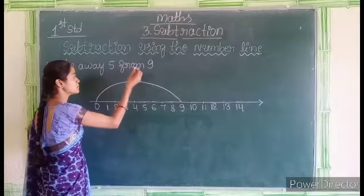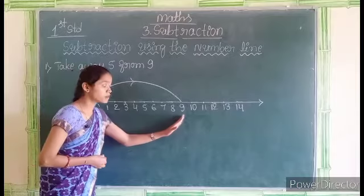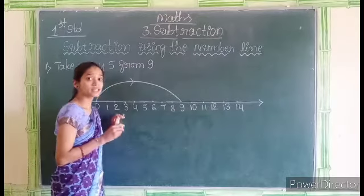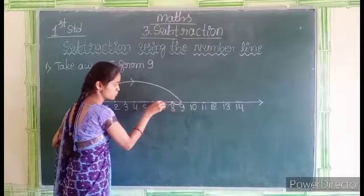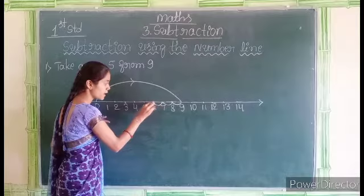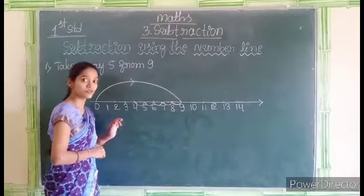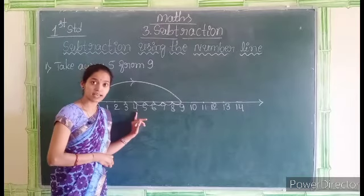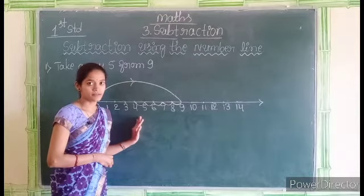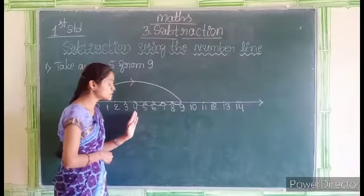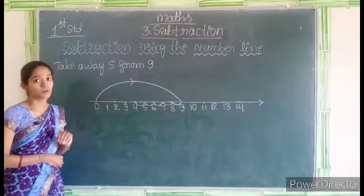To take away 5 from 9, we have to count 5 points back from 9. See: 1, 2, 3, 4, 5. We reached the answer at 4. The point at which we stopped is the answer. Here we stopped at 4, so 4 is the answer for this problem.